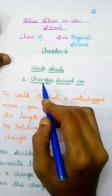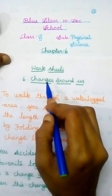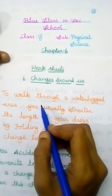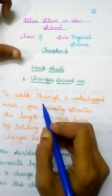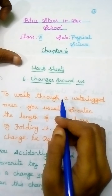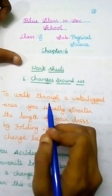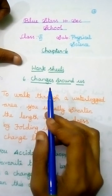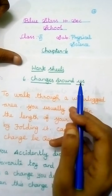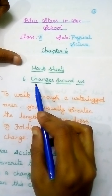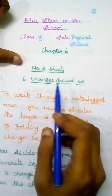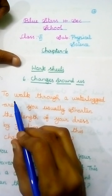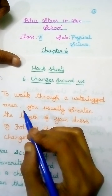Students, today we will see about the Changes Around Us worksheet. I have 10 questions for you. You only write the answers. First, take an A4 sheet, write your name, class, subject and lesson name — Changes Around Us. First write the questions and then write the answers.